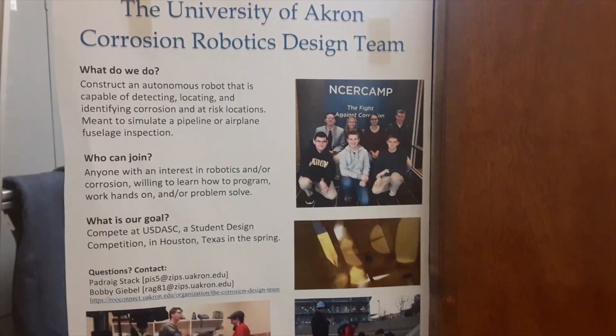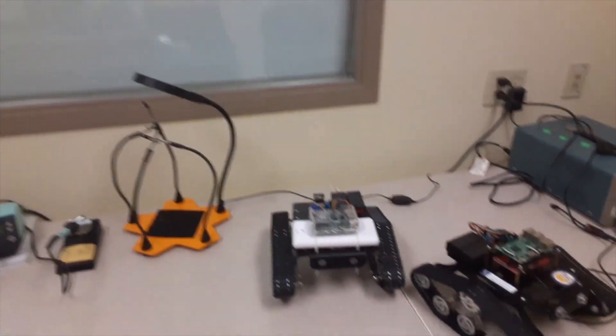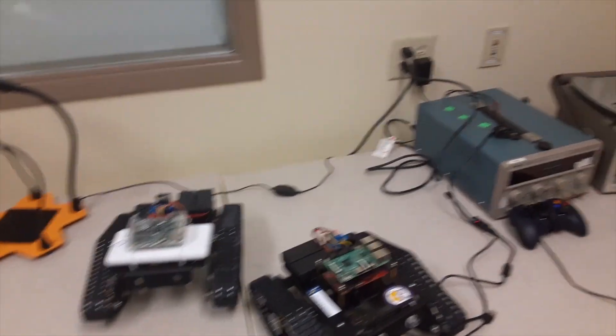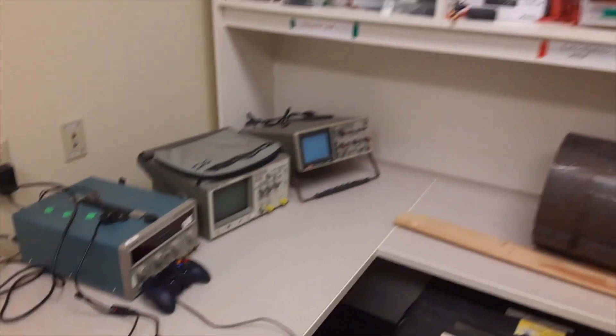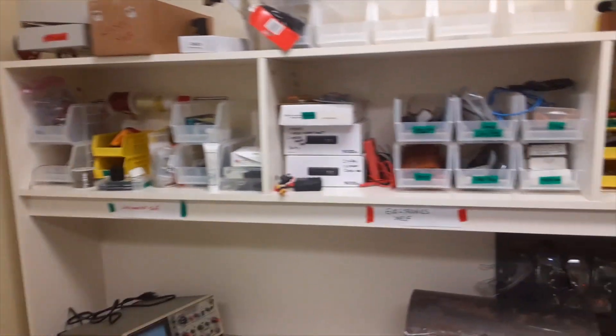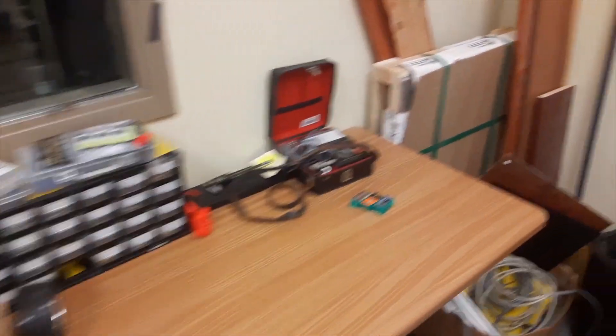In addition to the labs, we also have the design team room, which we're going to check out. The design team in particular is the corrosion design team. These guys build inspection robots to go in and analyze various situations and environments that induce corrosion and provide a report back to a group of judges. Not only are they making and programming the robot themselves, but they are also presenting their findings and hosting programming sessions where everyone gets to learn a little bit of programming, how to take the machine apart, put it back together, and the corrosion analytics.